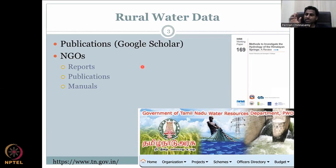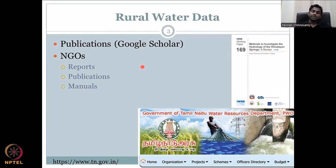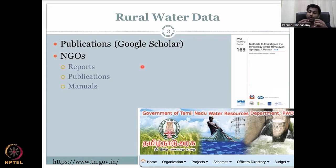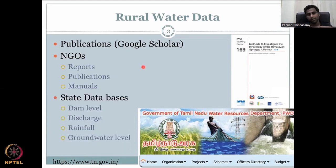NGOs keep their reports, publication manuals, and research publications in the open domain. Research publications sometimes require money to publish. Since NGOs work on short budgets and are not profit-making, they publish in the open domain — accessible via Google. I will go through some of their reports and how they operate.